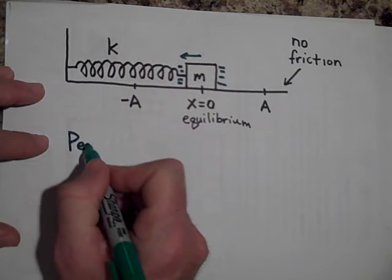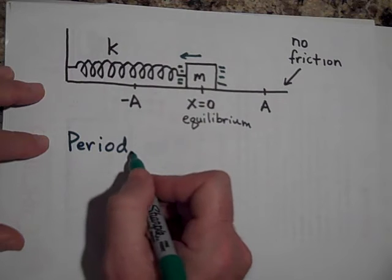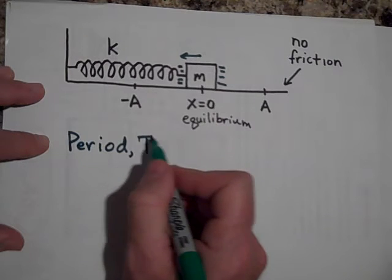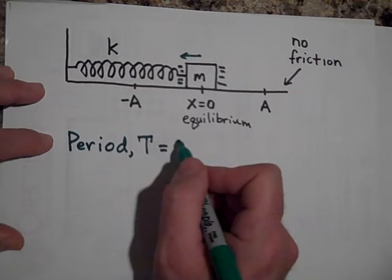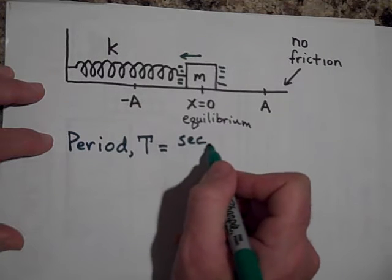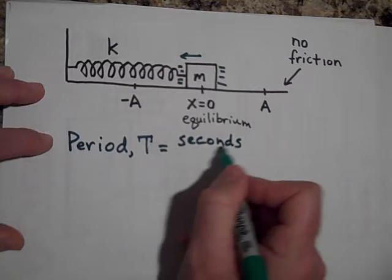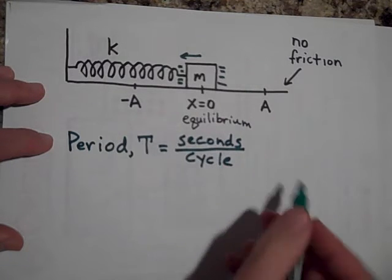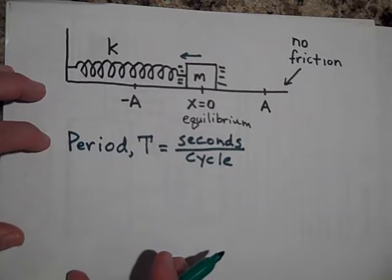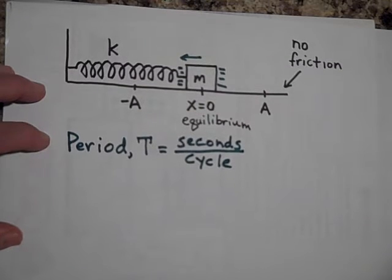we'll shorten it with a capital T. Period is the number of seconds per cycle, or the time for one round trip. It will be in seconds usually, seconds per cycle.